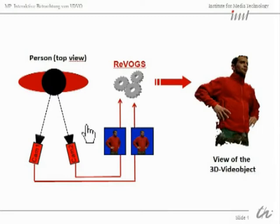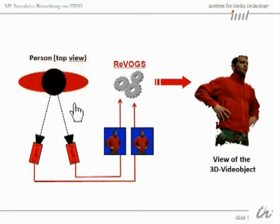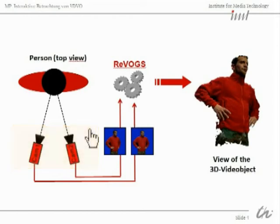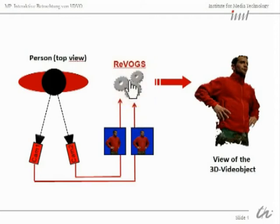Before we can compute a view of a 3D video object, we have to record it with at least two real cameras. Here you can see a person from the top and two cameras pointing at it. The recorded pictures with a blue screen in the background are transmitted to the Revox system.